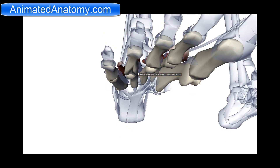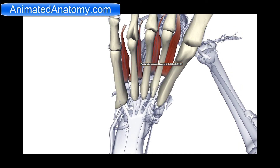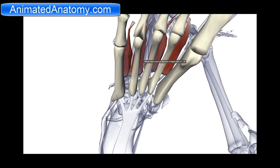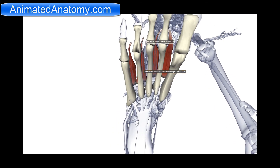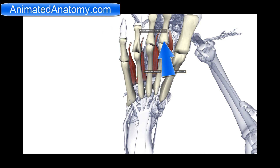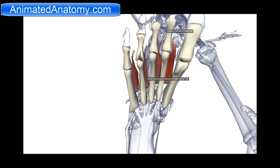The dorsal interossei muscles, as you can see here, have origin — for example on the fifth toe — on the fifth metatarsal bone, but it inserts here on the fourth digit. Same goes here: it originates on the fourth metatarsal bone but it inserts on the third phalange. This produces the phalanges being pulled laterally, and from both sides it stays in place. That's why the muscles are pulled apart from each other, and that's called the abduction of toes.